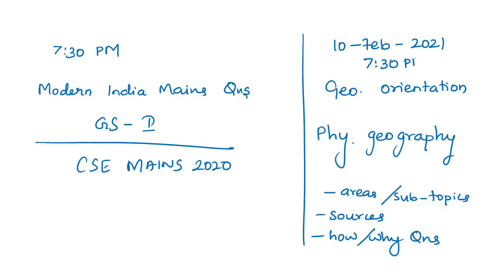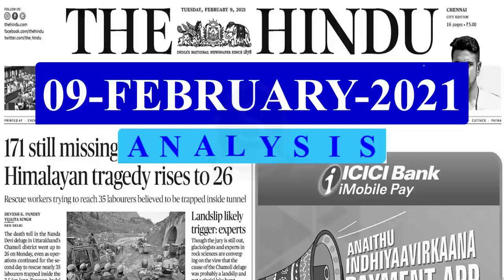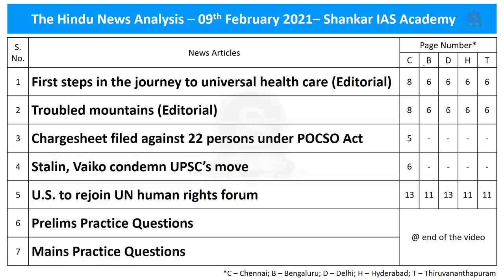Now let's move on to the daily Hindu news analysis sourced from the Hindu newspaper. These are the list of news articles selected for today's analysis and their page numbers from different editions of the newspaper. The link for the handwritten notes in PDF format and the timestamping of the discussed articles are provided in the description and also in the comment section for the benefit of mobile phone viewers. Now let's move on to the analysis of the first news article.